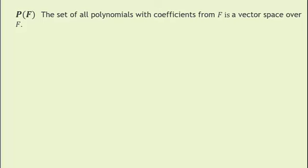Here is an interesting vector space where the vectors are polynomials with coefficients from the field F. The one we're used to is P(R): all polynomials with real coefficients. But let's do a different one: instead of P(R), let's look at P(Z_3), that is, all polynomials with coefficients coming from the field Z_3.